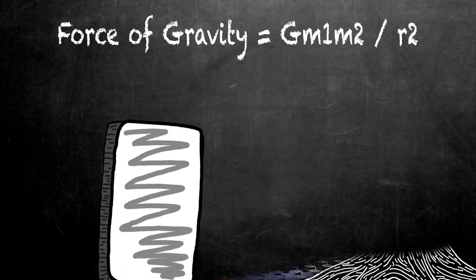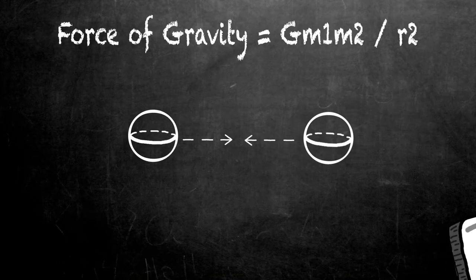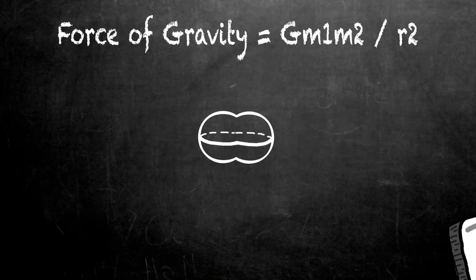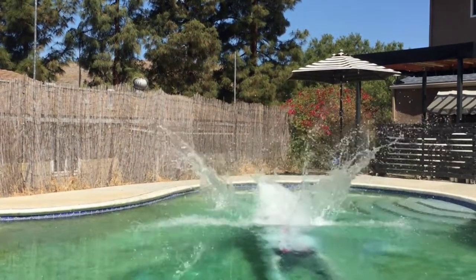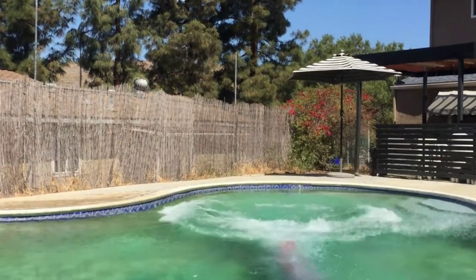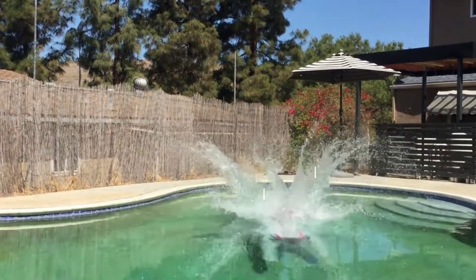It's the force that attracts or pulls any two objects together. So when you jumped in the air, the Earth's gravity pulled you down. And if you want to get super specific, your gravity pulled the Earth up to you.